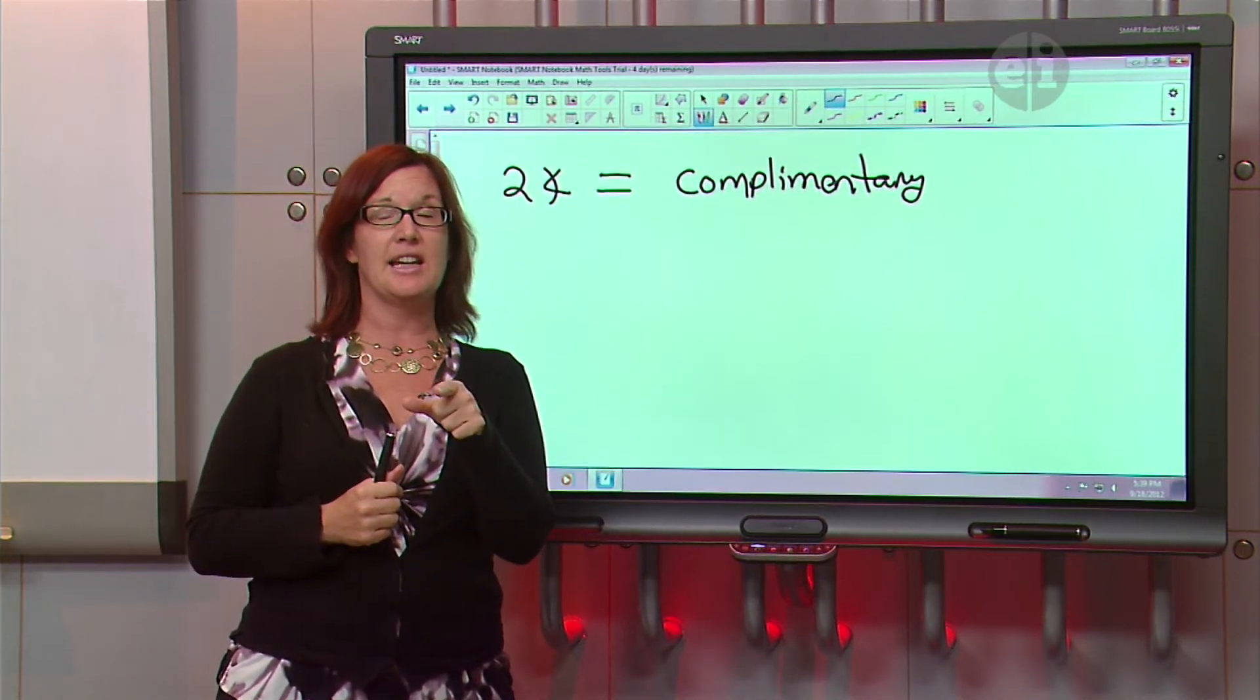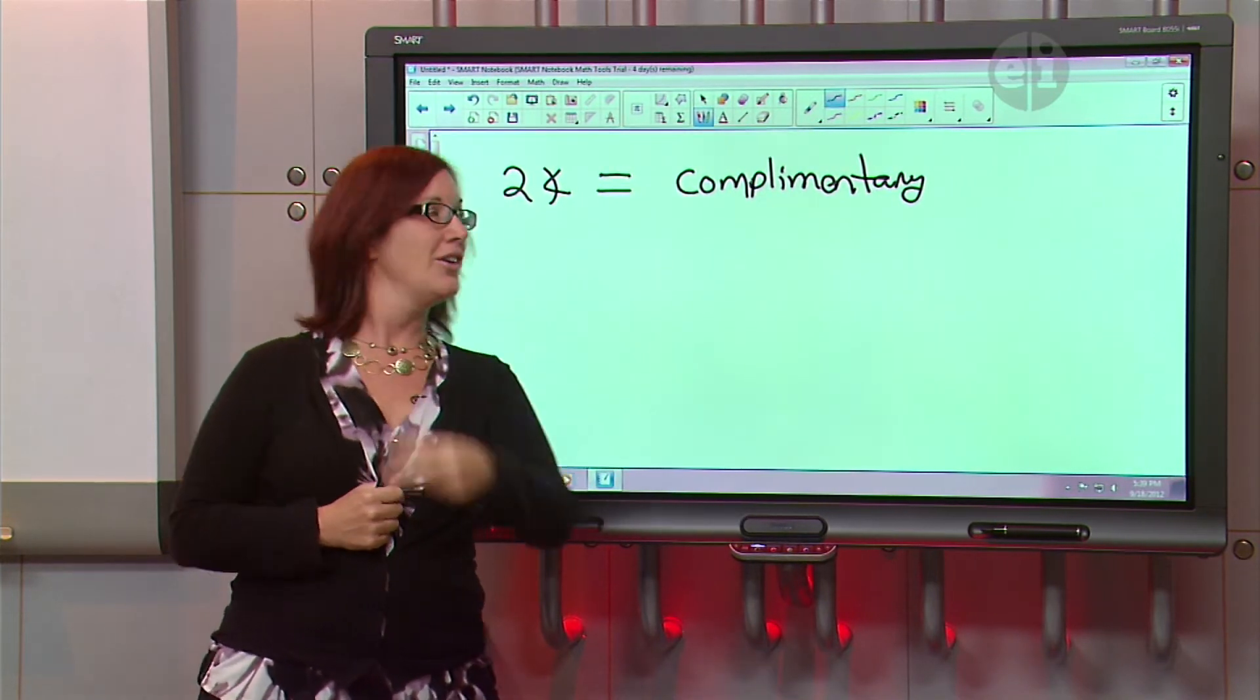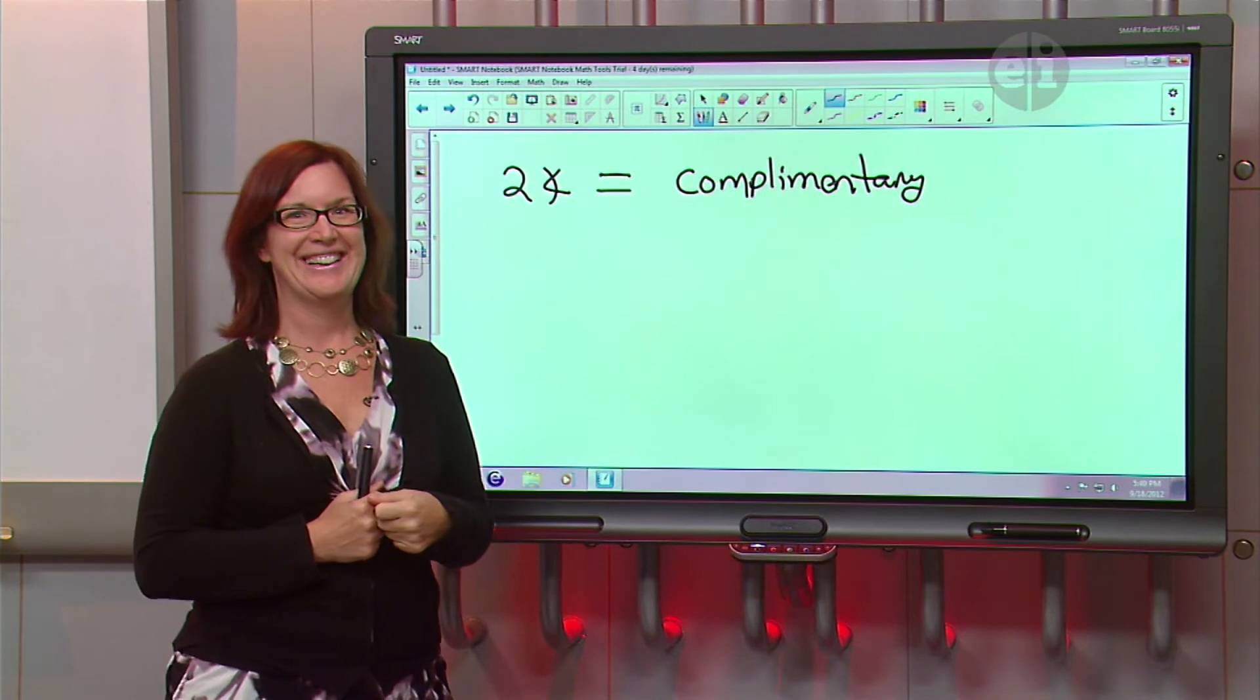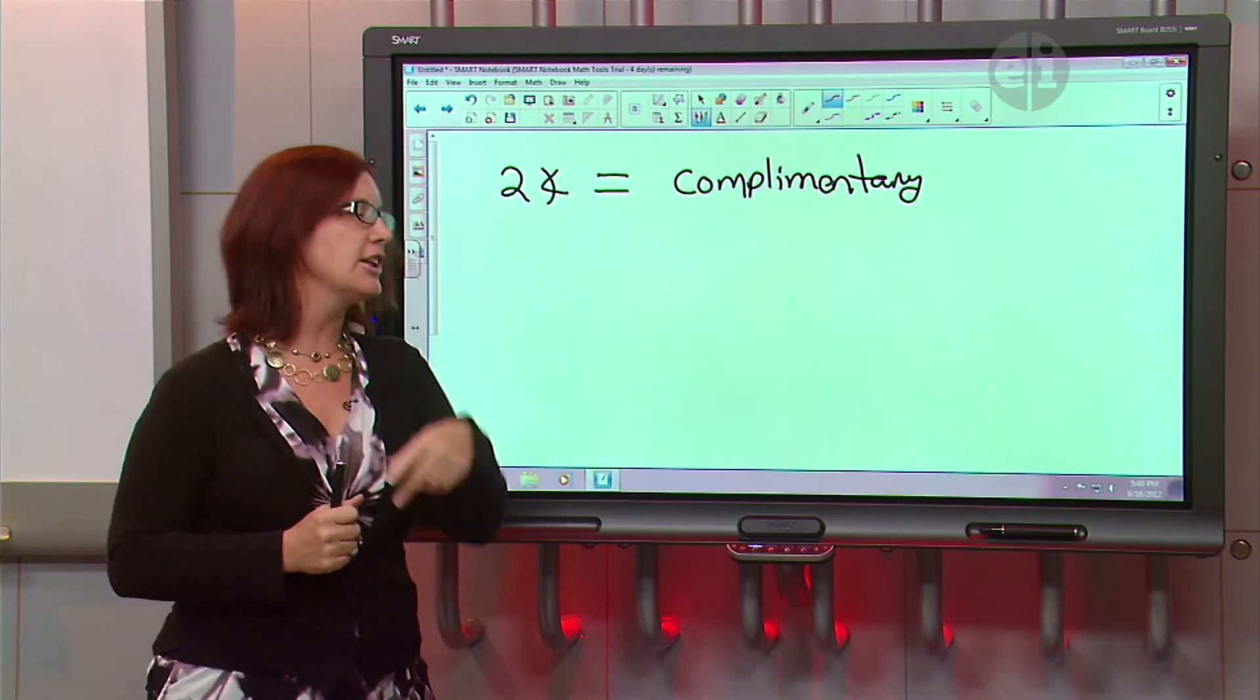You believe correctly. They do add up to 90 degrees. But it's not just an angle that's 90. It has to be a pair of angles that add up to 90 degrees, right? Yes. So it's not just one. It's two of them add up to 90.